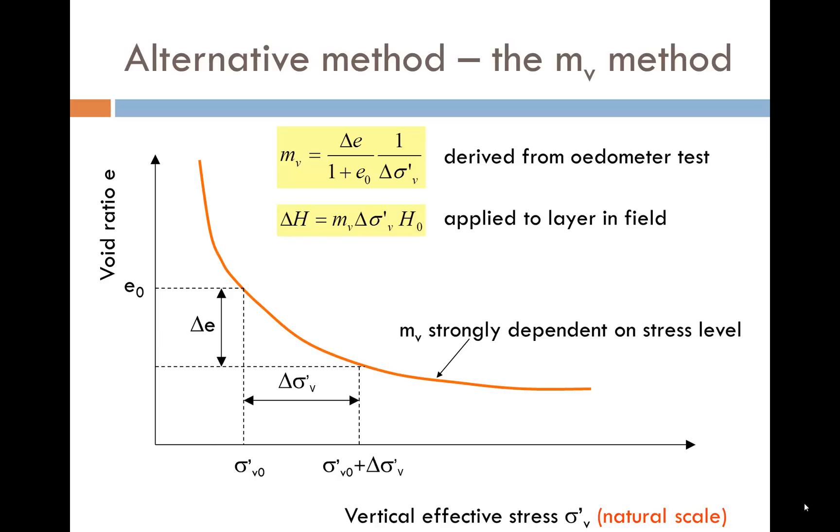An alternative to this method is what's called the mv method. If the vertical effective stress is plotted on a normal scale instead of the log scale we have been using, we get this curve instead of the two straight lines. The equation on the top defines mv, essentially the slope of the curve between stresses σ'v and σ'v plus Δσ'v divided by 1 plus e0. Once mv is known from an oedometer test, it can be applied to a field layer of thickness H0 using the second equation.